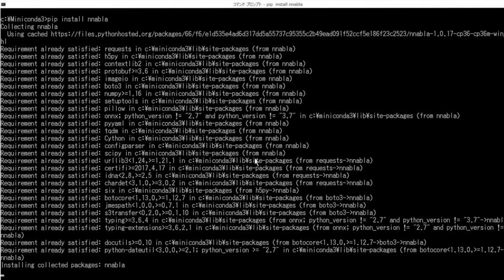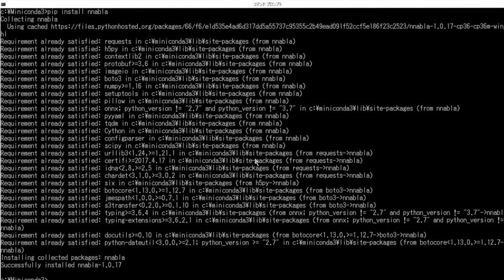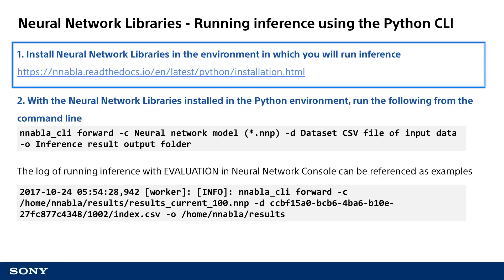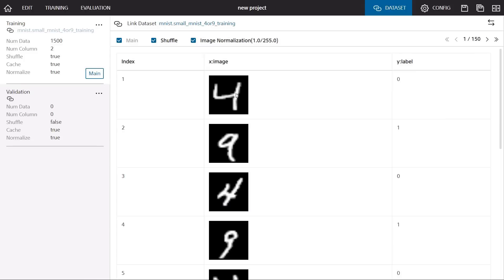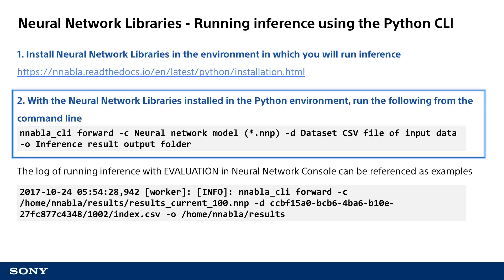The Neural Network Libraries is compatible with Linux, Mac, and Windows, so the inference can be run on many different environments. Refer to this document for more information. Once you have finished the Neural Network Libraries setup, use this command line to run inference. In this tutorial, let's run inference for an image classifier that will determine if an input is a 4 or a 9. The main command used is nnabla_cli and the sub-command is forward.